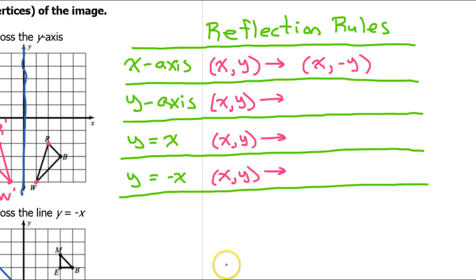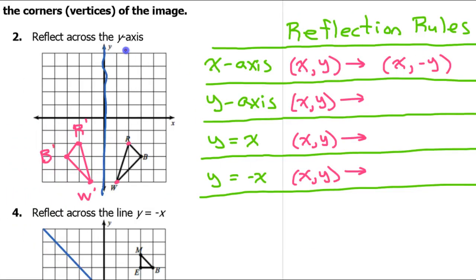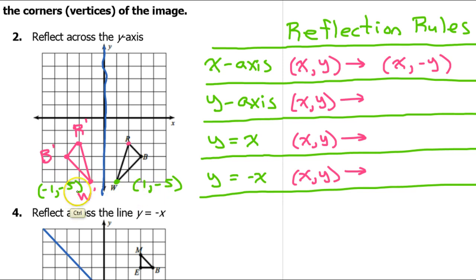Now let's look at what happens when we do a reflection over the y-axis. A convenient point to use is W. Point W has coordinates 1 comma negative 5, and the image W prime has coordinates negative 1 comma negative 5. The y-coordinate didn't change, but the x-coordinate changed signs. So for a reflection over the y-axis, the rule is (x, y) becomes (−x, y).